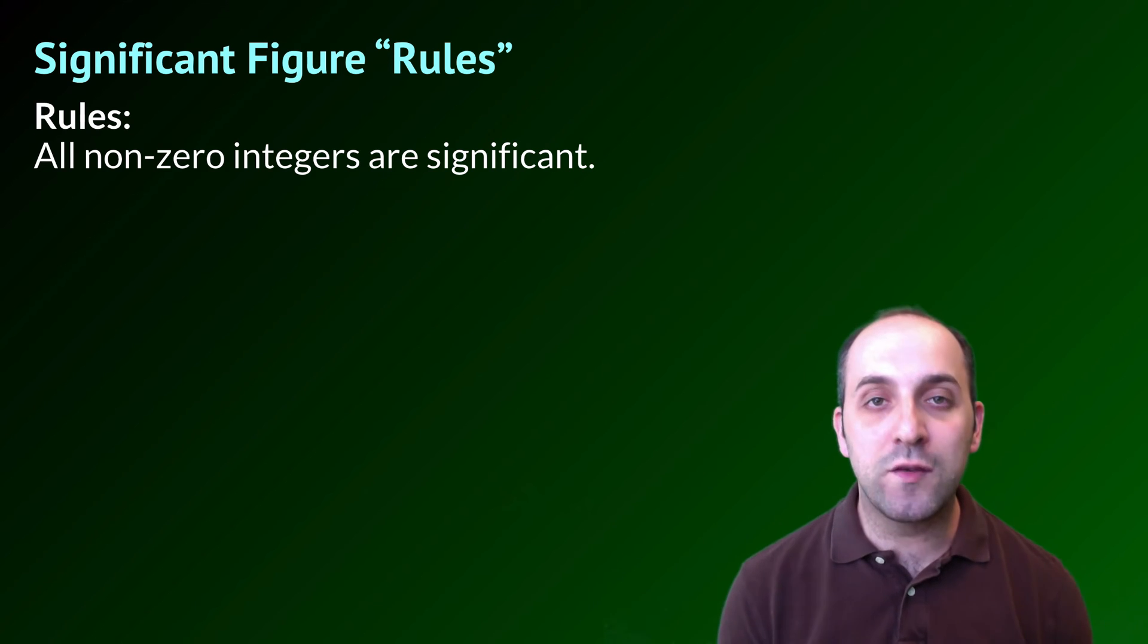Once we start to put zeros in, however, zeros could either be known with certainty or they could just be placeholders. In order to determine that, we use a couple of rules to help us figure out numbers with or without a decimal point.